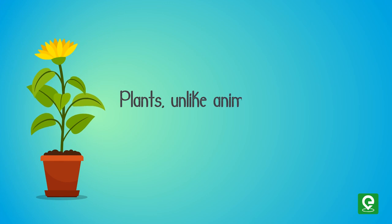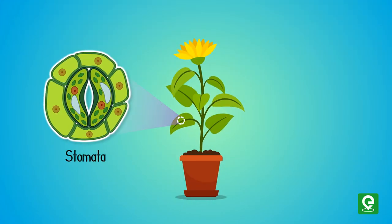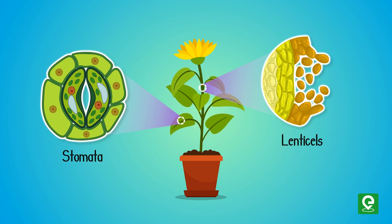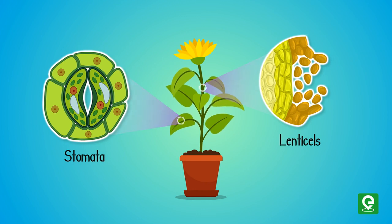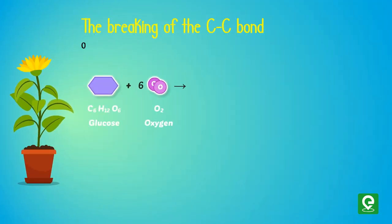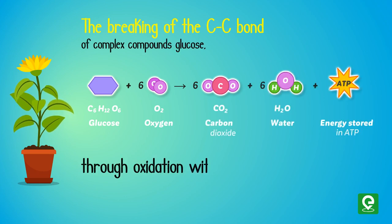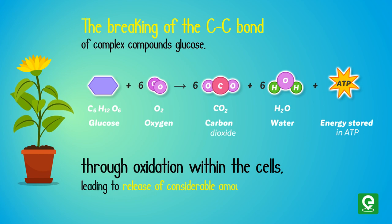Plants, unlike animals, have no specialized organs for gaseous exchange, but they have stomata and lenticels for this purpose. The breaking of carbon bonds of complex compounds like glucose through oxidation within the cells, leading to the release of a considerable amount of energy, is called respiration.